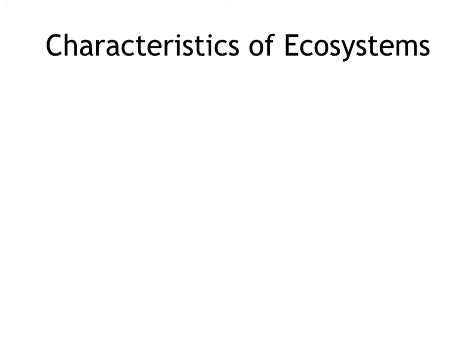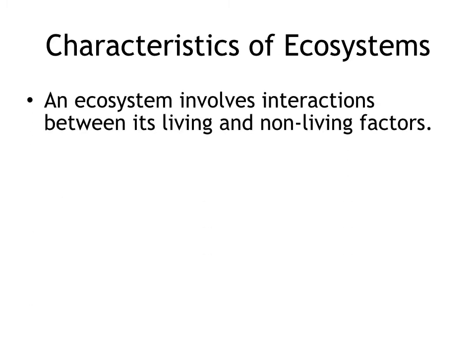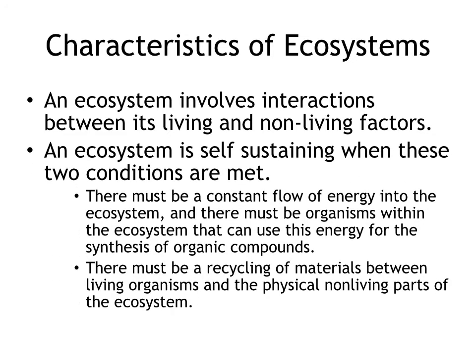Characteristics of an ecosystem: an ecosystem involves interaction between living and non-living factors. An ecosystem is self-sustaining when two conditions are met. First, there must be a constant flow of energy into the ecosystem and organisms within it that can use this energy for the synthesis of organic compounds. Second, there must be recycling of materials. So we need energy flow — covered last section — and recycling of materials, covered in this section.